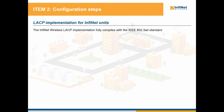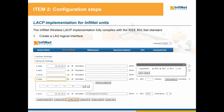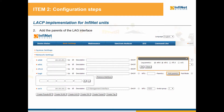Let's see what are the configuration steps for our Infinite units. The Infinite Wireless LACP implementation fully complies with the IEEE 802.3AD standard for link aggregation. The first step is to create a LAG logical interface. Most commonly, LAG 0 will be added as it can be seen in our example. Next, add the parents of the LAG interface, which for our example will be the two physical Ethernet ports of the hardware 11 unit.